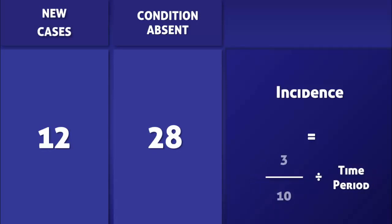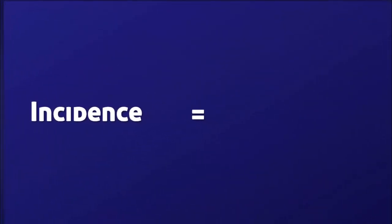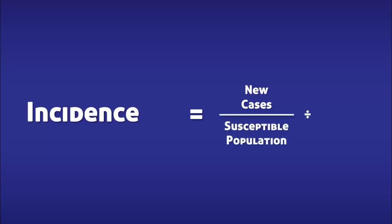By entering the appropriate values into the equation, we find that the incidence of the condition in this group was one out of every ten people per year. Once more, incidence is the number of new cases over the susceptible population divided by the time period.